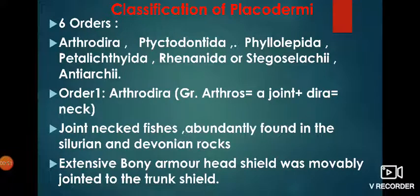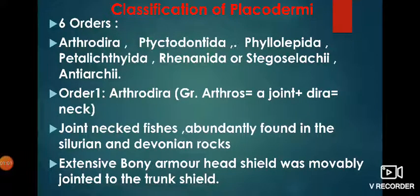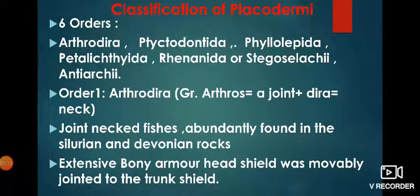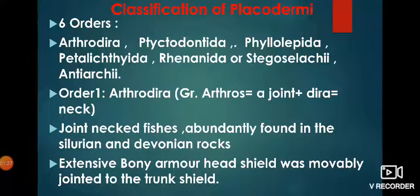Placoderms originated about 400 million years ago in the Devonian period of the Paleozoic era. They flourished through the whole Devonian and the whole Carboniferous era, and they went extinct in the Permian period, about 280 million years ago. I also told you that the primitive ostracoderms are probably the ancestors of Placoderms.